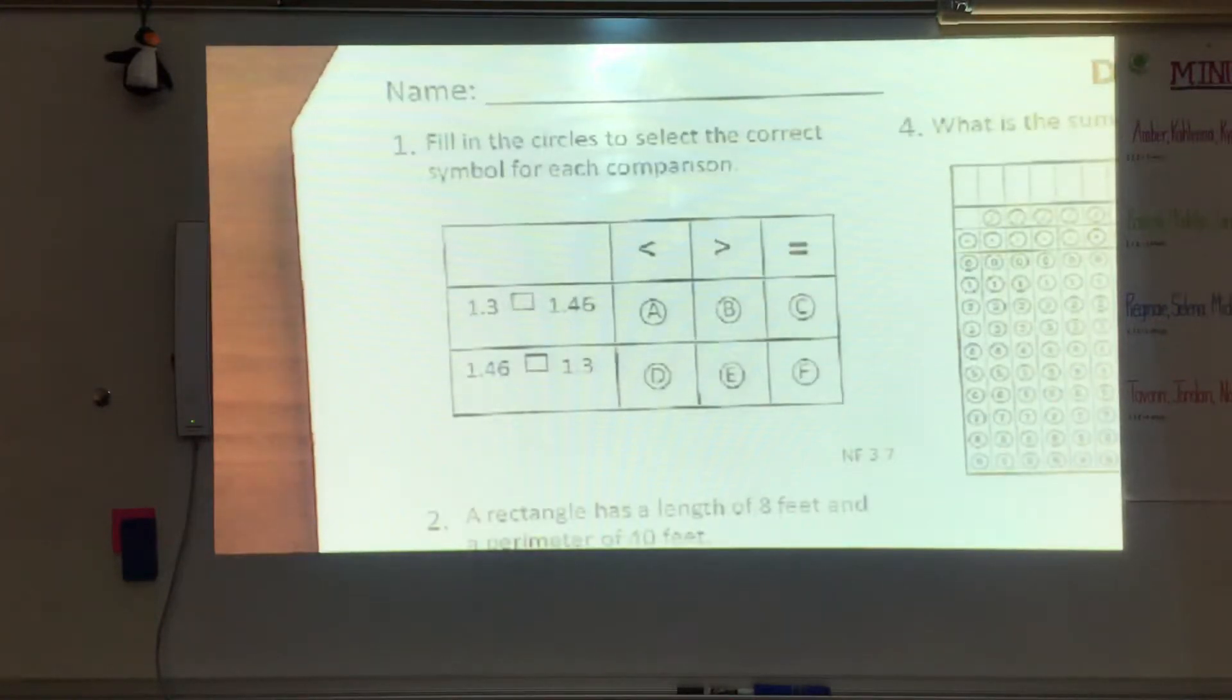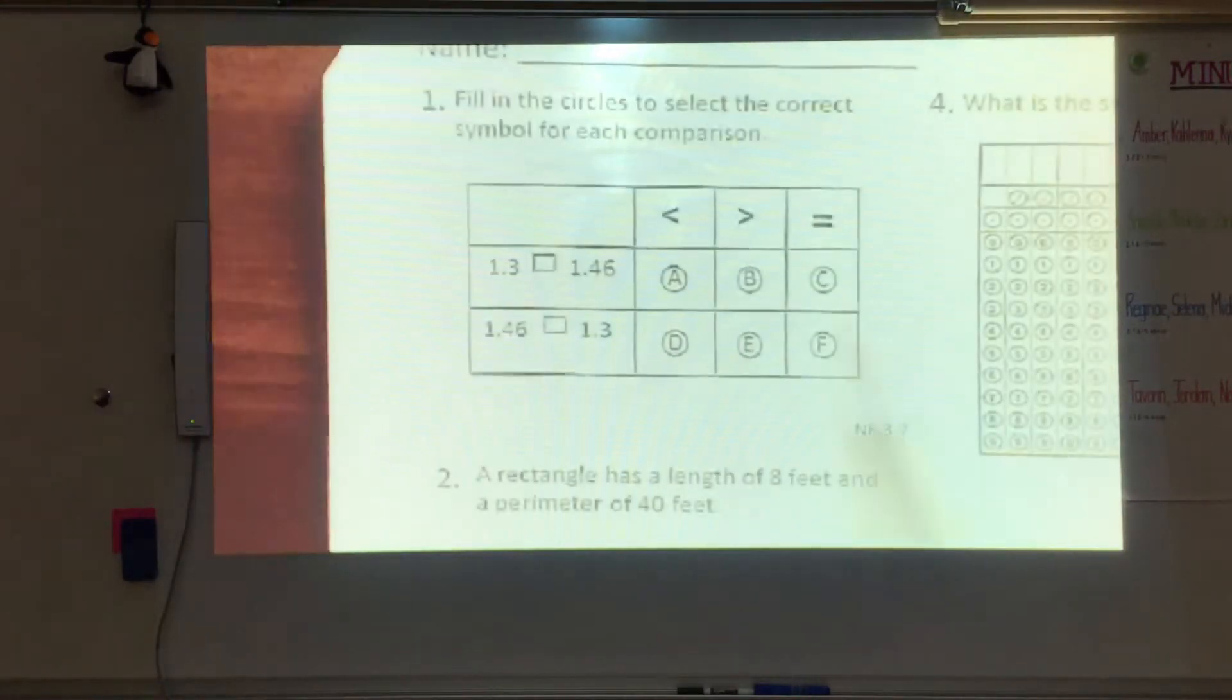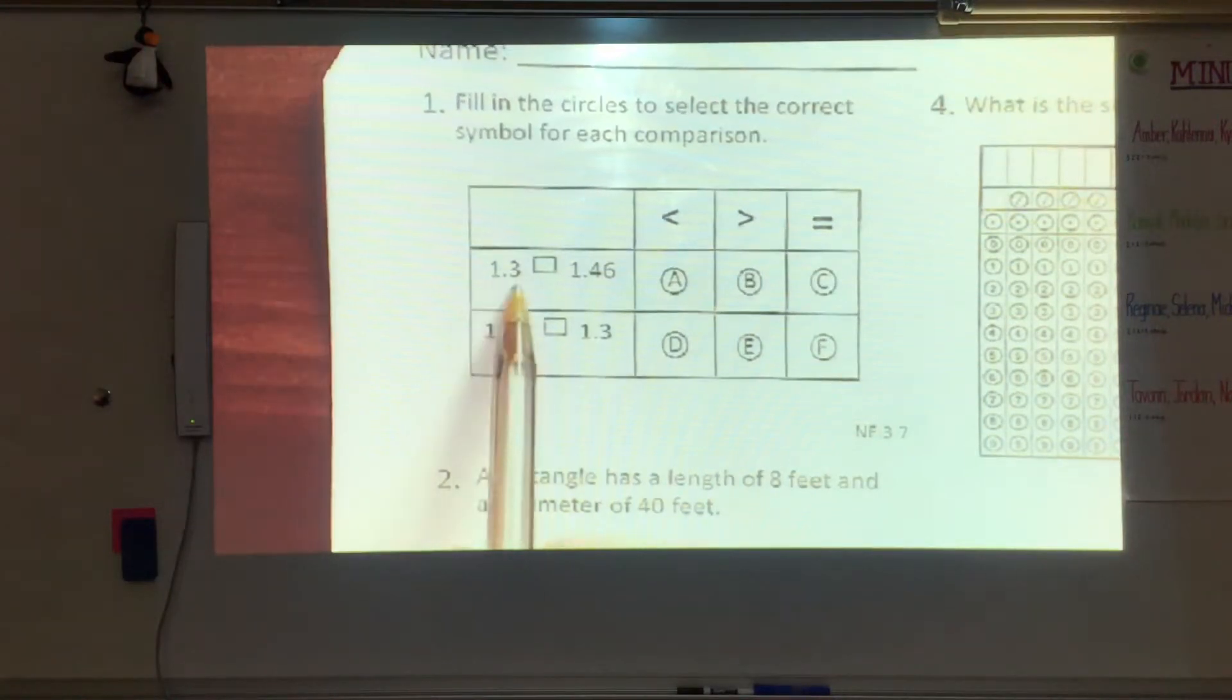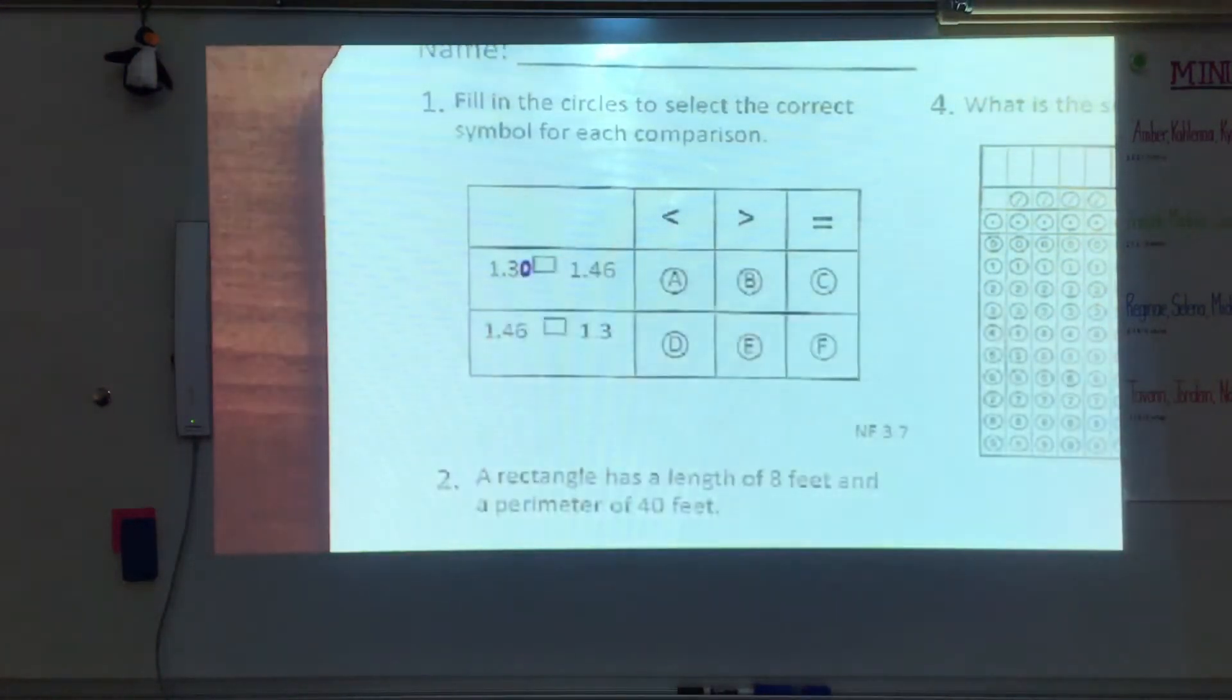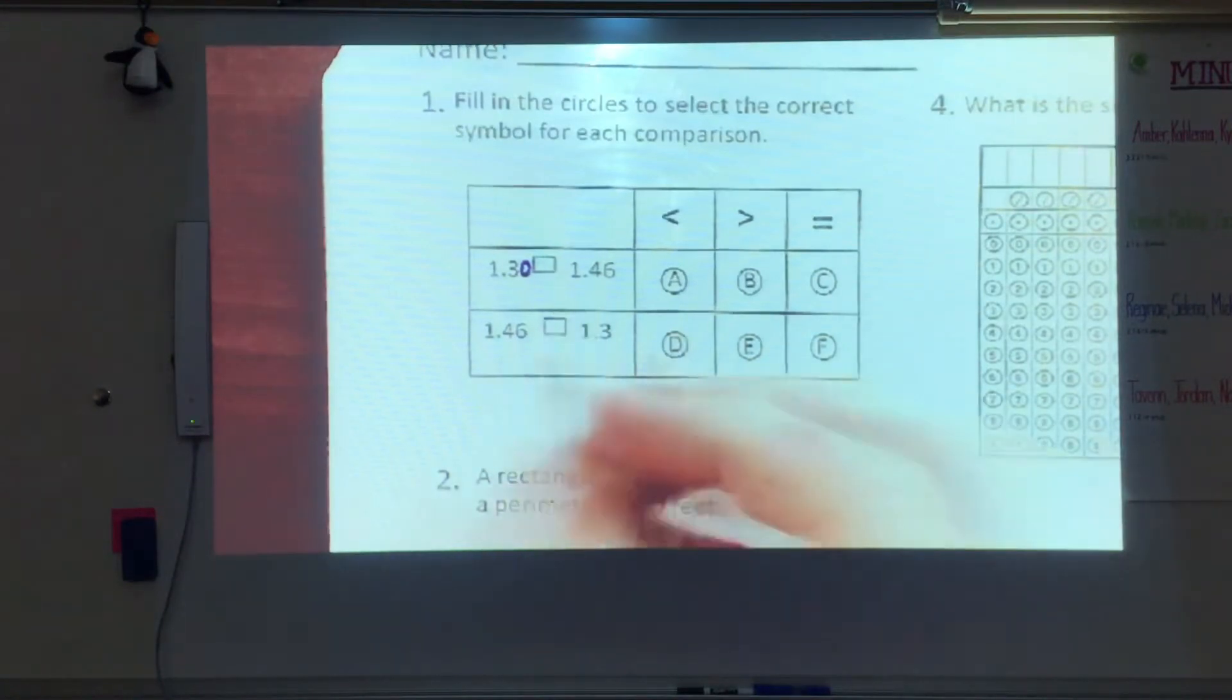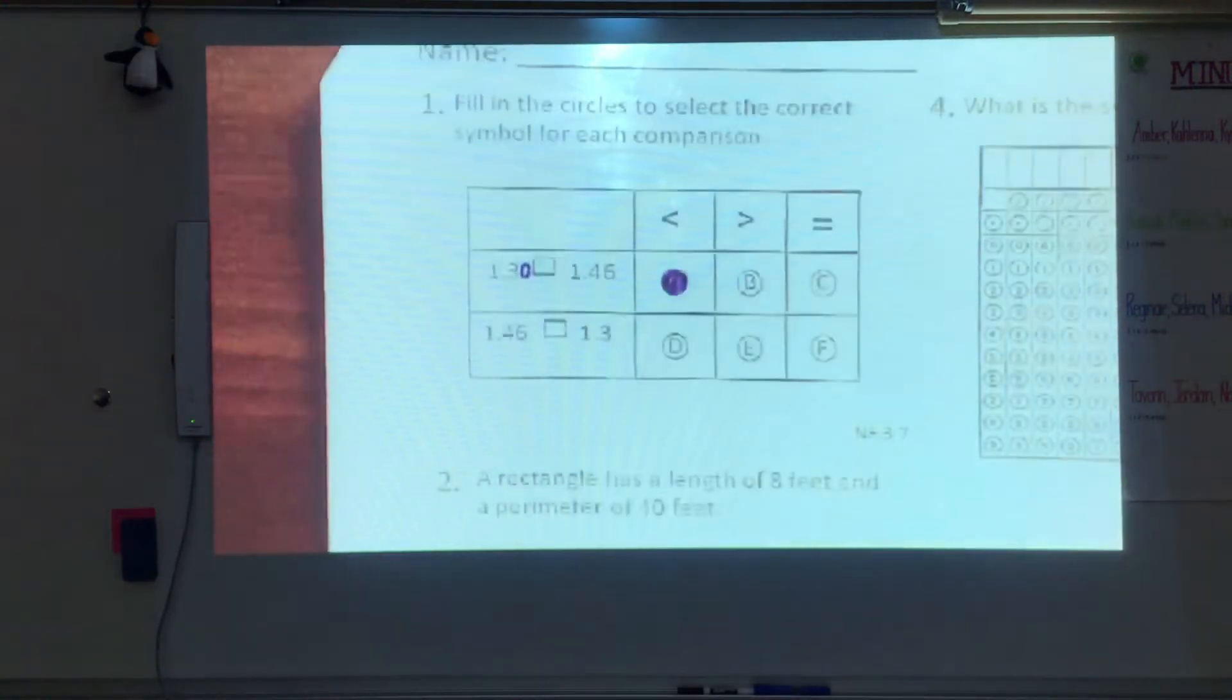When we look at number one it says to fill in the circles to select the correct symbol for each comparison. Remember that this first one means less than, that would be greater than, and equal. When we take a look at 1.3 and compare that to 1.46, we like to go ahead and add that hundredths place on there so we fill it in with a zero. So remember it's almost like you're saying you have a dollar thirty or a dollar forty six. So 1.30 is less than 1.46.